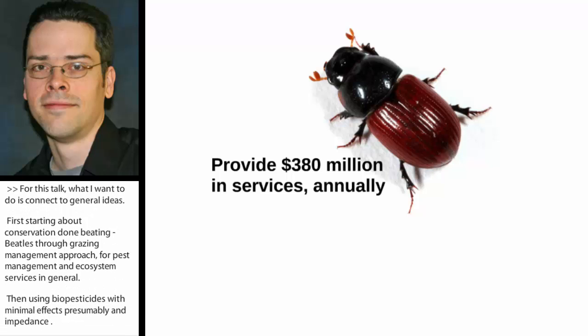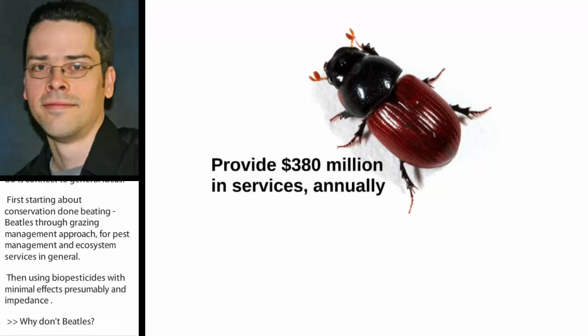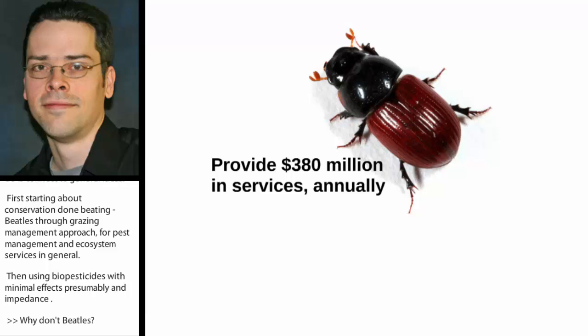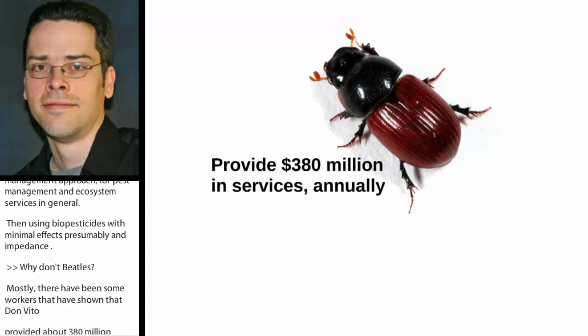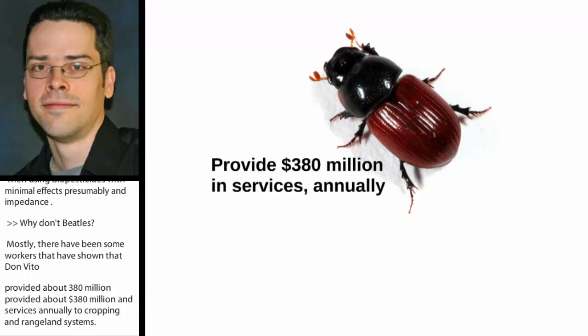There's been work showing that dung beetles provide about $380 million in services annually to cropping and rangeland systems. That's primarily through their activities in the dung pack — suppressing some dung-breeding pests. They're also important in nutrient cycling, gas sequestration, and they can improve the moisture-holding capacity of the soil.